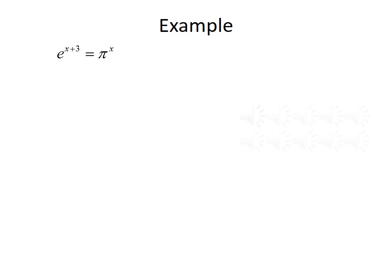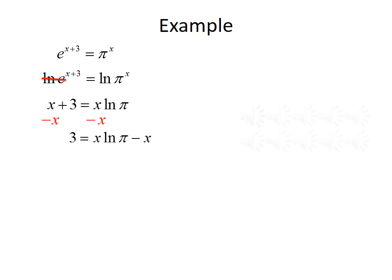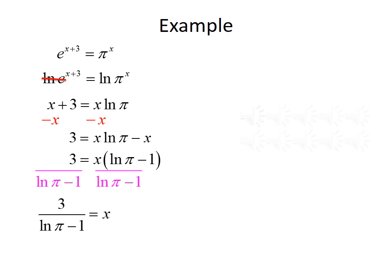Let's look at one last example: e to the (x plus 3) equals pi raised to the x. Since e and pi are different bases, we take the natural log of both sides: ln(e^(x+3)) equals ln(π^x). Since ln and e are inverses, they cancel, giving x plus 3 equals x times ln(π). Subtracting x from both sides: 3 equals x·ln(π) minus x. Factoring x out: 3 equals x times (ln(π) minus 1). Dividing both sides by (ln(π) minus 1) gives x equals 3 divided by (ln(π) minus 1), which is approximately 20.728.